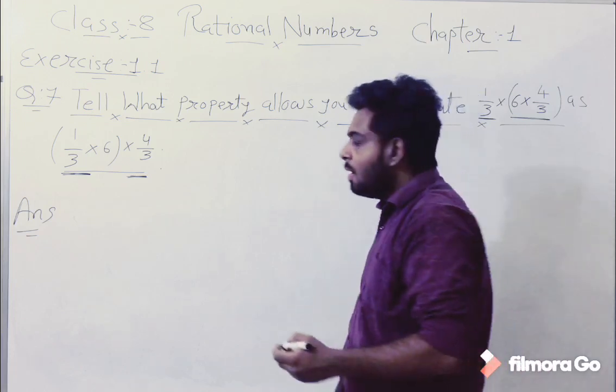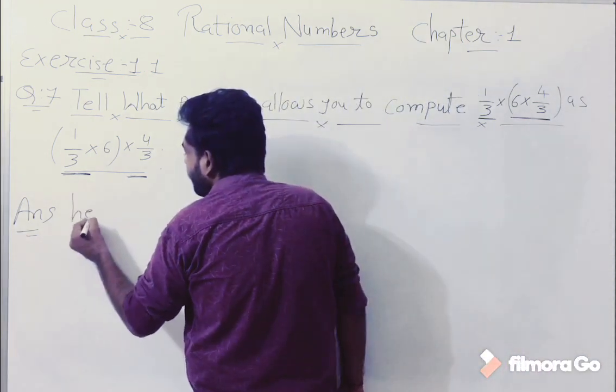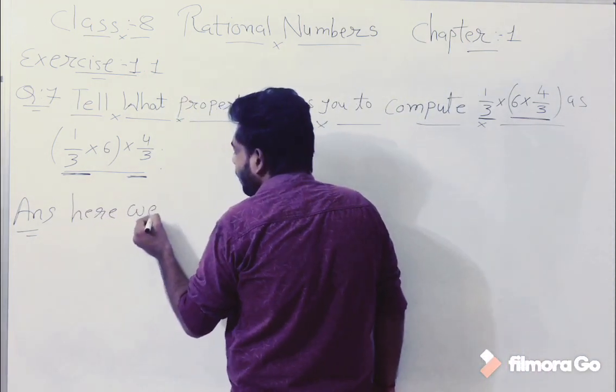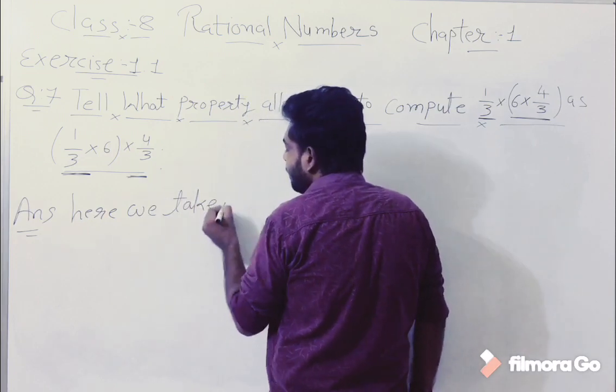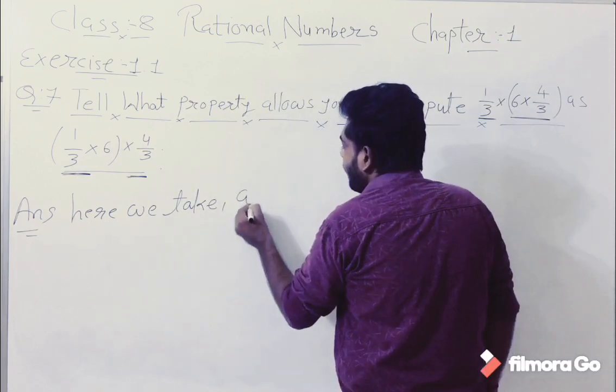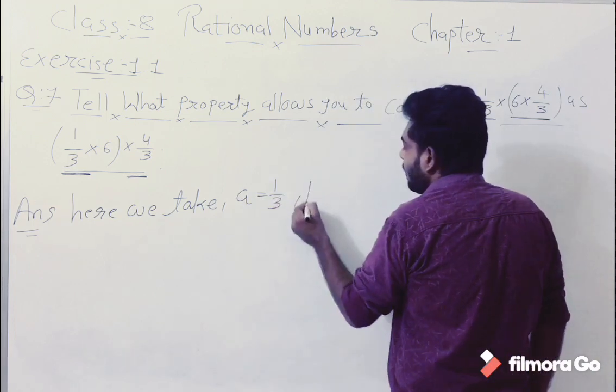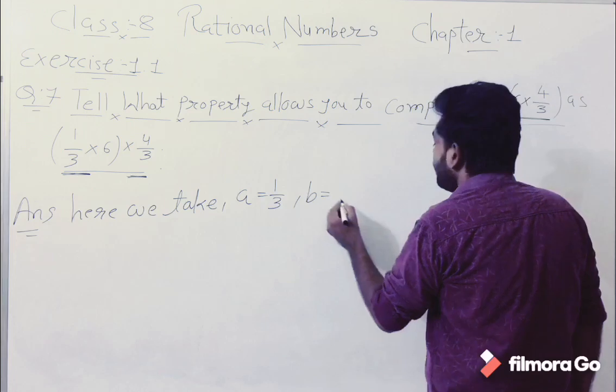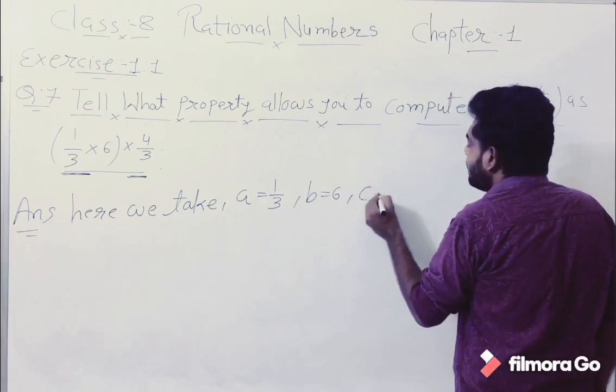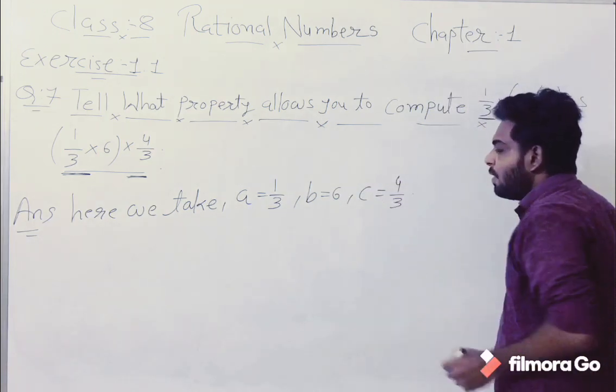For example, here, we take A is equal to 1 by 3, B is equal to 6, and C is equal to 4 by 3.